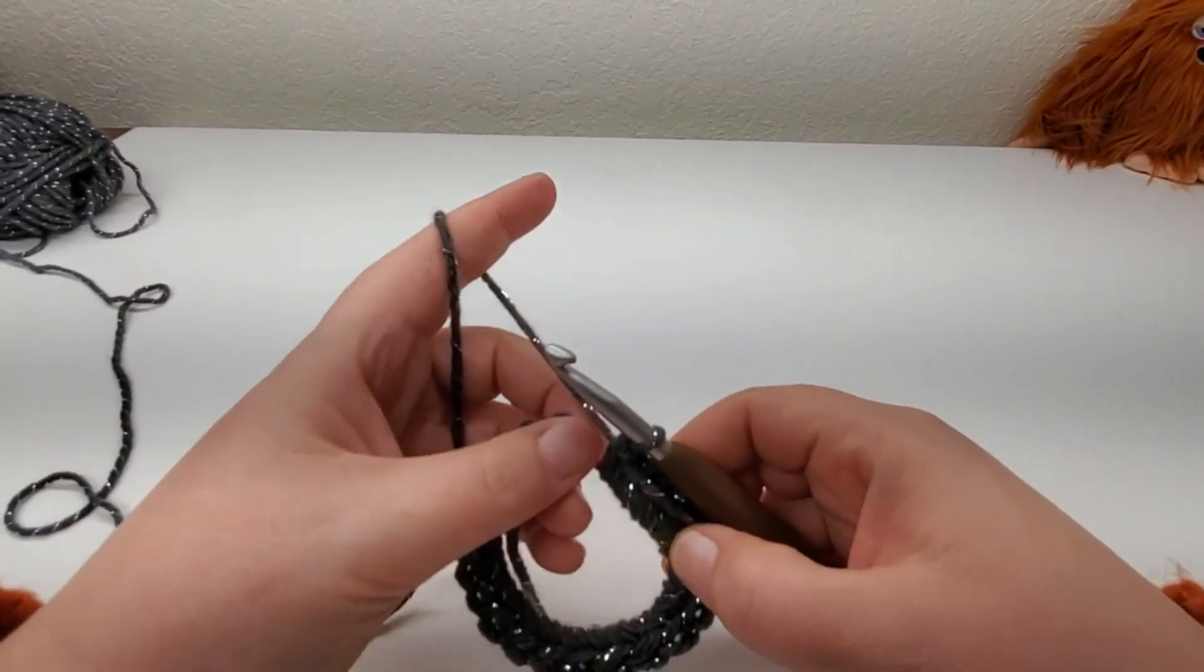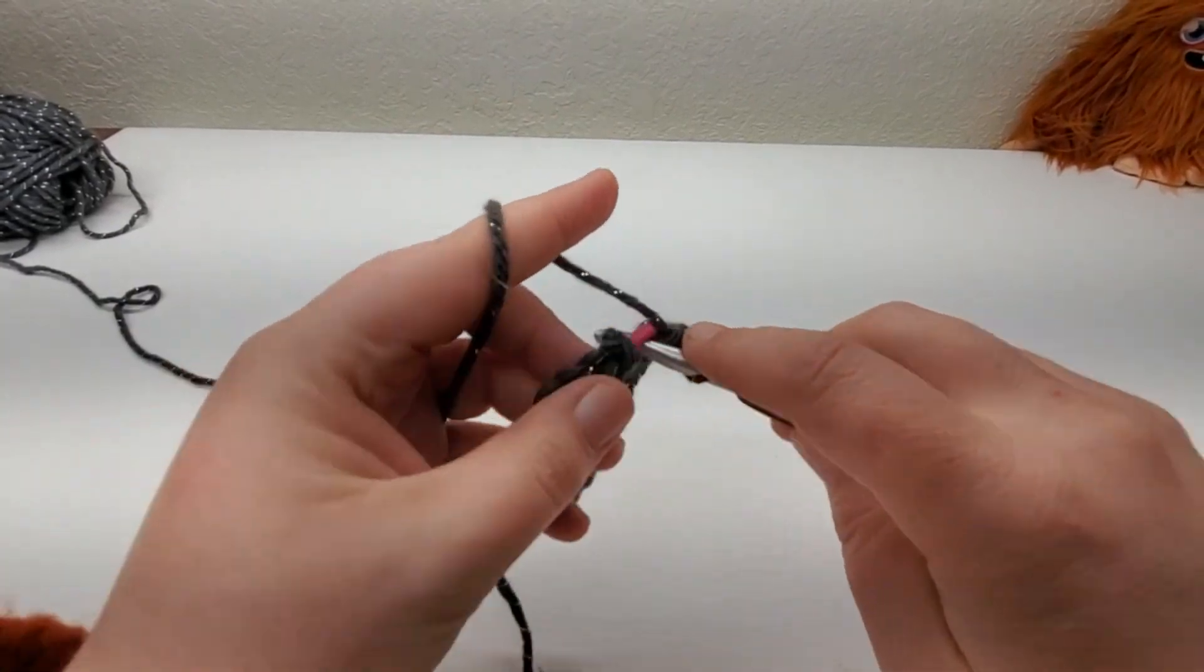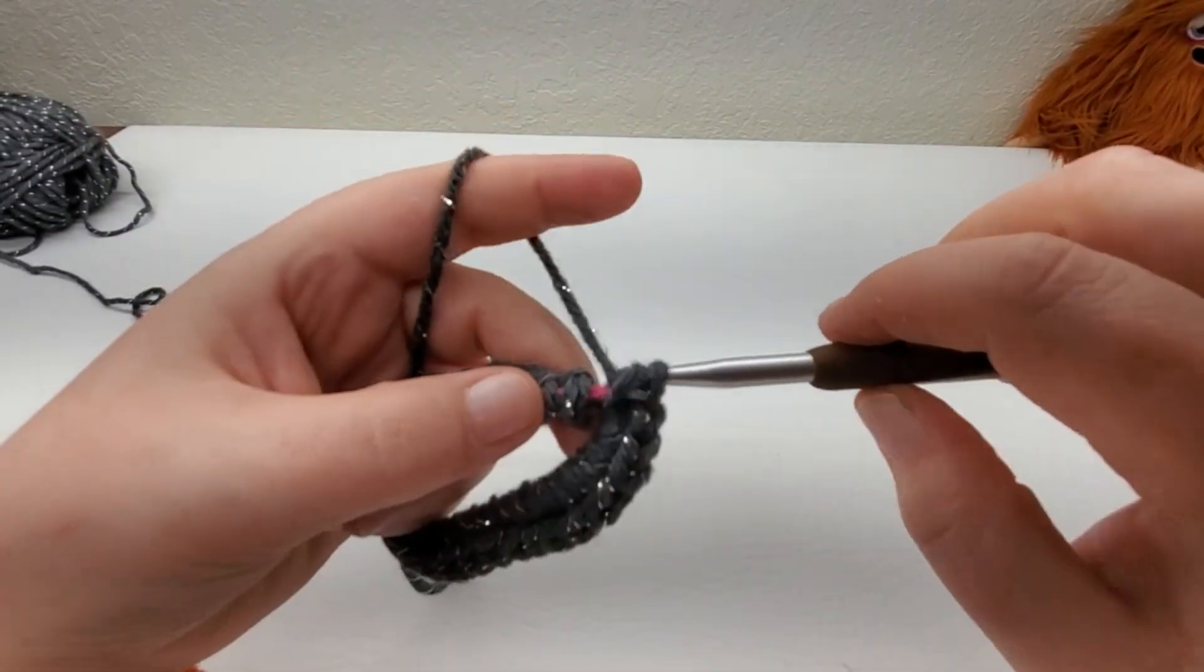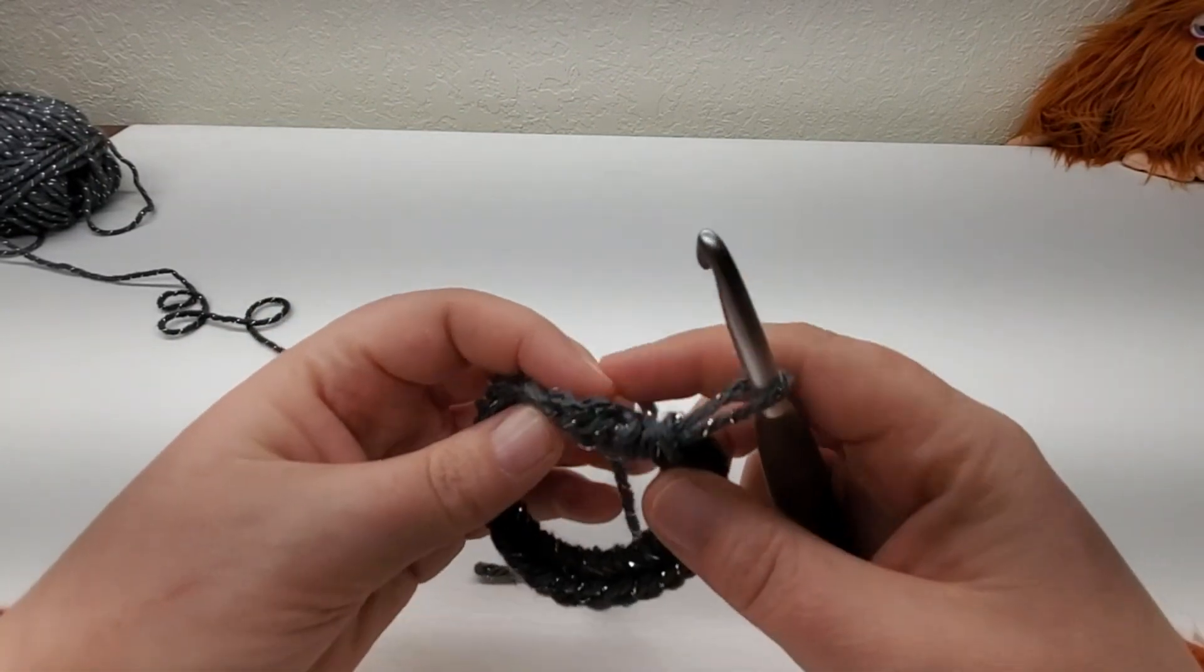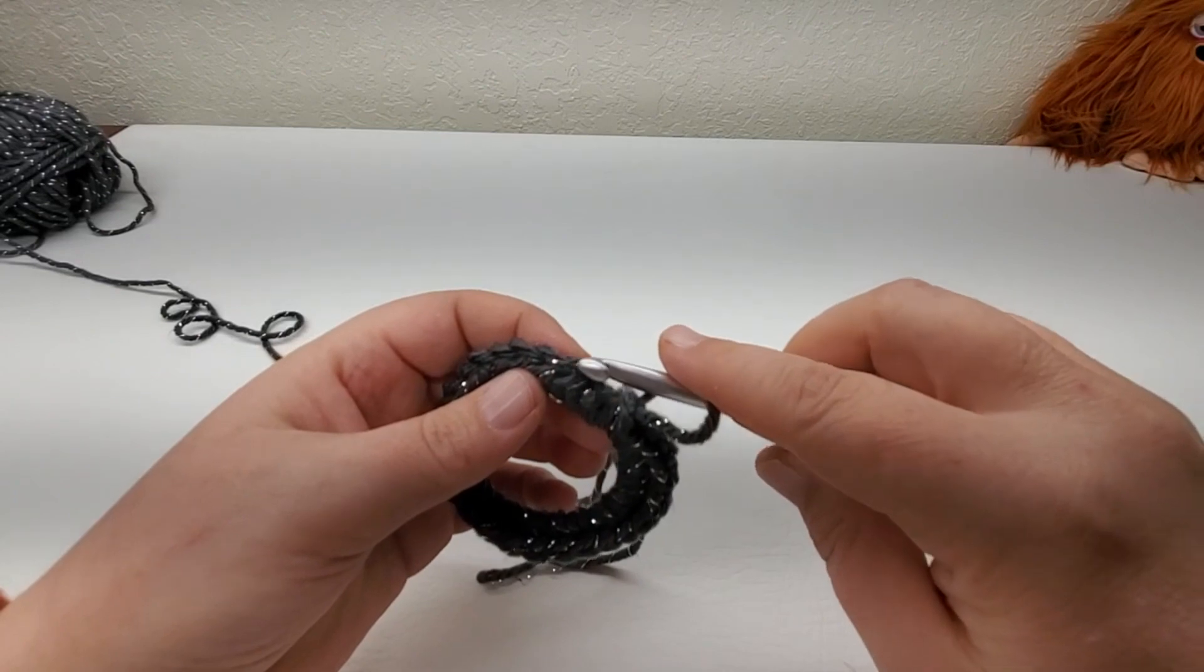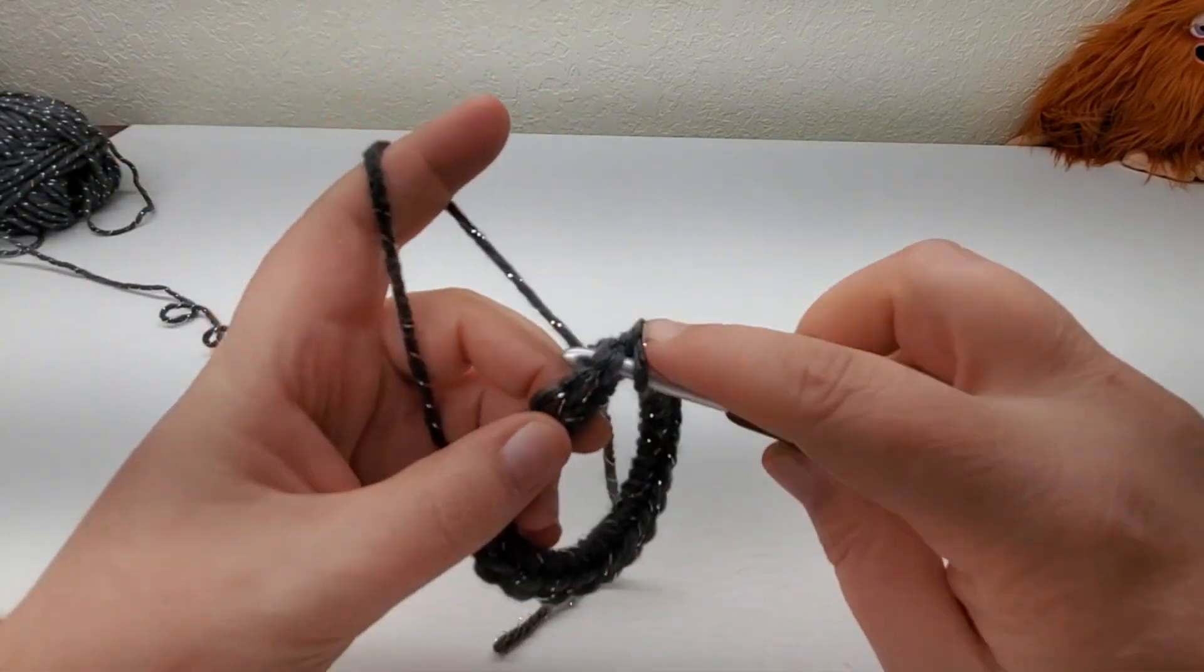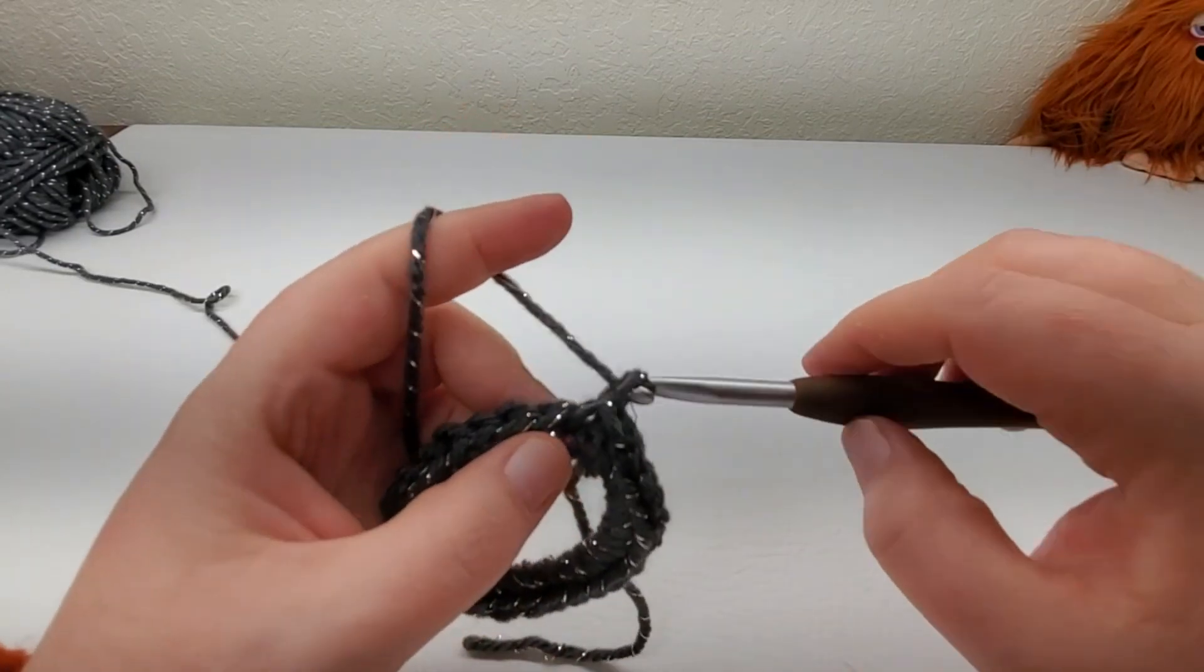I have 26 and I'm having to scoot them over a little bit. 27 and 28. So now we're going to slip stitch back to our first. So if you look, there's our slip stitch, chain one, first single. So now we're going to chain one.